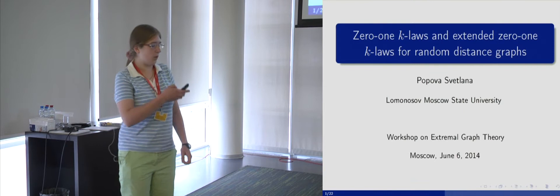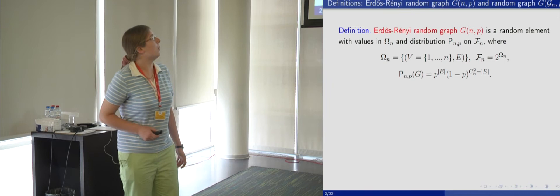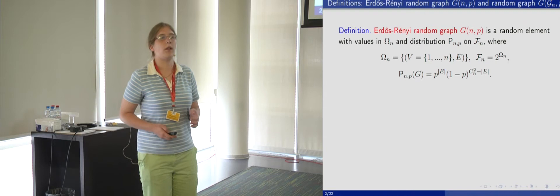Let's start with some basic definitions. First of all, the Erdős-Rényi random graph G(N,P). Here we have N vertices and connect pairs of vertices with probability P, independently from each other and from other pairs of vertices.